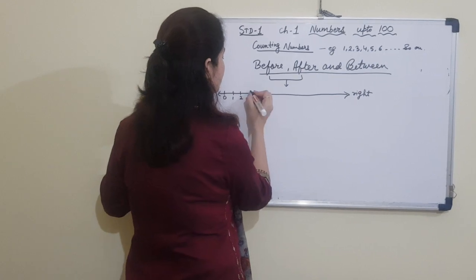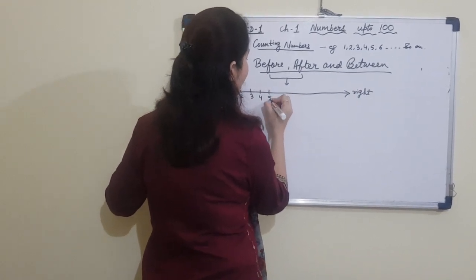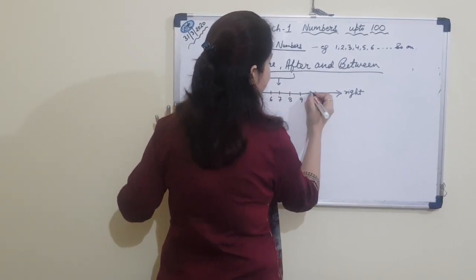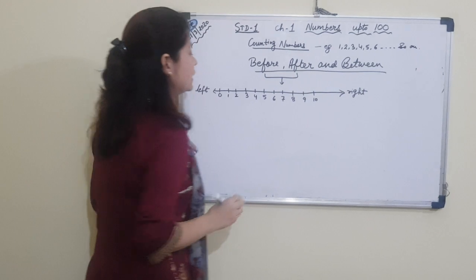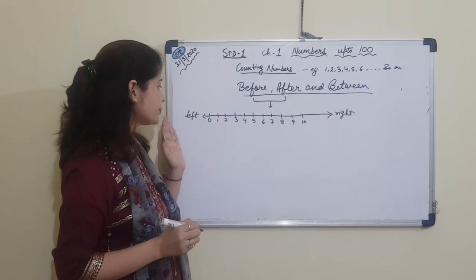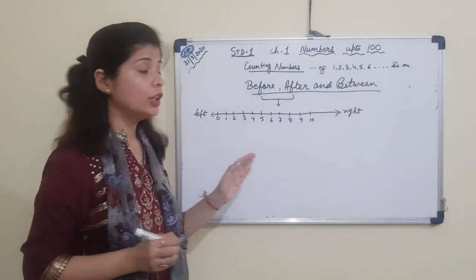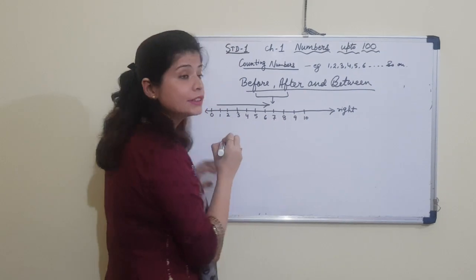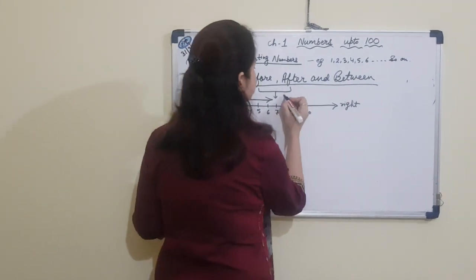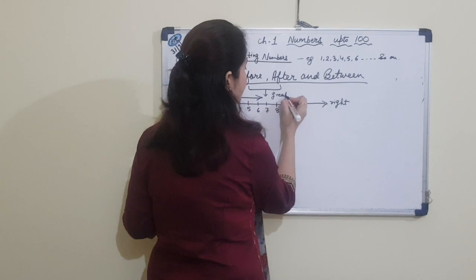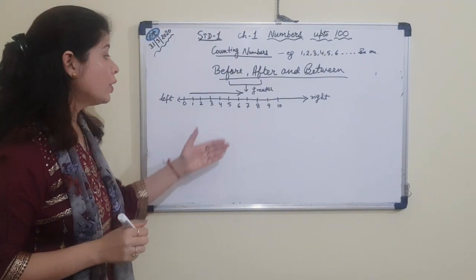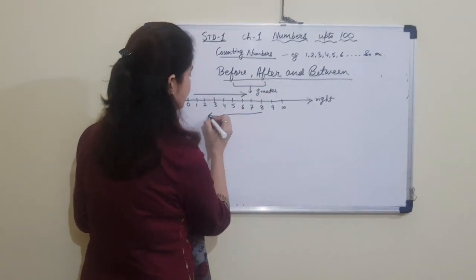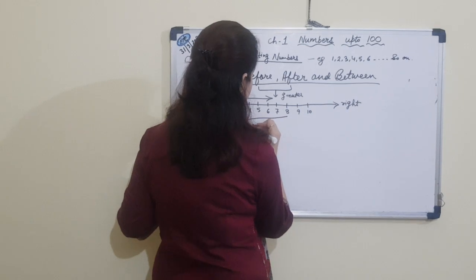The number line goes: 0, then 1, 2, 3, 4, 5, 6, 7, 8, 9, 10 and so on. You can see that the numbers are moving from left to right — moving towards the greater side, so this shows greater numbers. When numbers move from right to left, this shows smaller numbers.